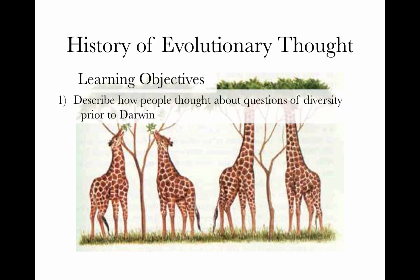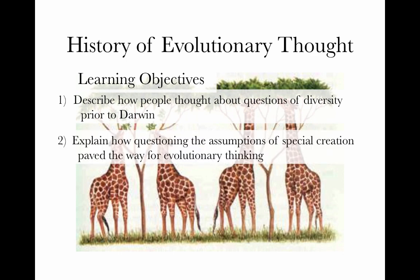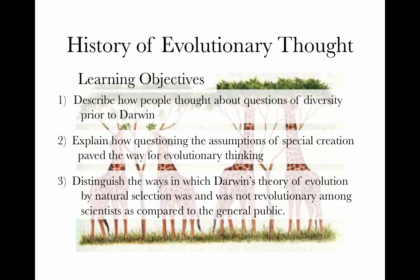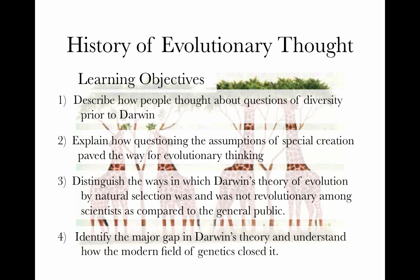The learning objectives for this lesson are: first, to describe how people thought about questions of diversity prior to Darwin; second, to think about how special creation differs from Darwin's ideas and how questioning the assumptions underlying special creation paved the way for evolutionary thinking; third, to distinguish the ways Darwin's theory was and was not revolutionary among scientists compared to the general public; and to understand how modern genetics closed the major gap in Darwin's theory.